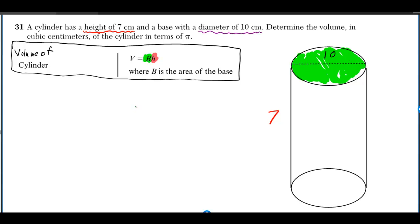The area of any circle is pi r squared. In this case our radius is 5, it's half of the diameter. So pi 5 squared is the area of that circle, and then we've got to multiply by the height and that gives us the volume.